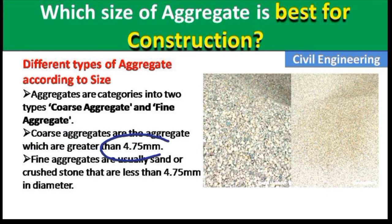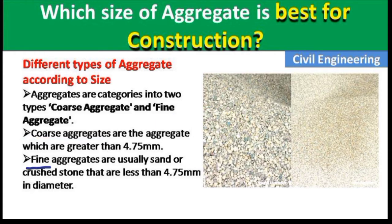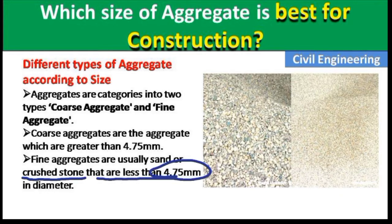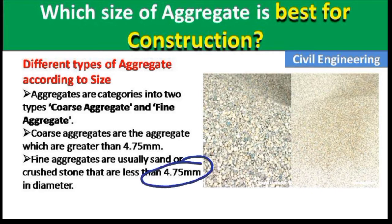Coarse aggregates are aggregates which are greater than 4.75 mm. If the aggregate has a size more than 4.75 mm then we call it coarse aggregate, as you can see in this picture. Fine aggregates are usually sand or crushed stone that are less than 4.75 mm in diameter. If the aggregate has a diameter less than 4.75 mm then we call it sand or fine aggregate.